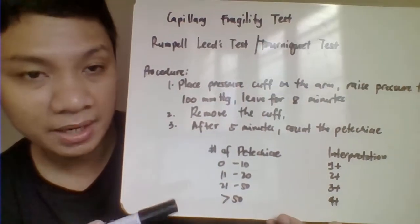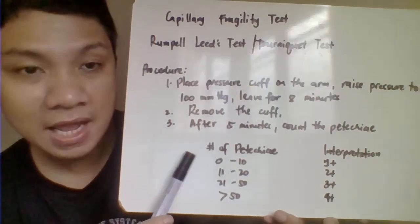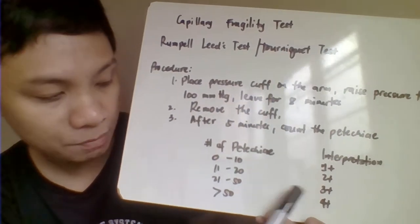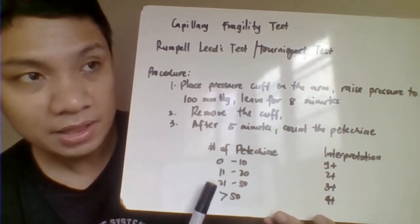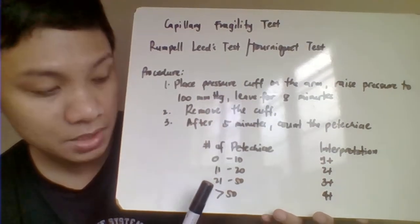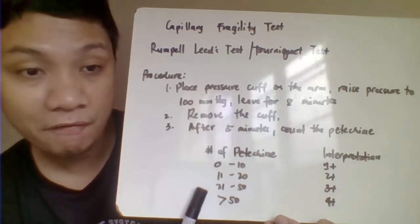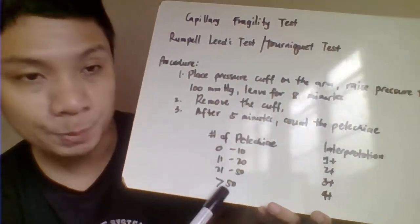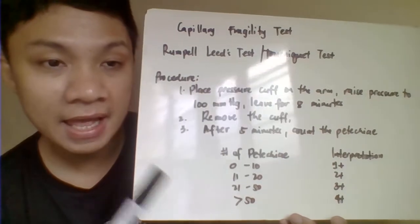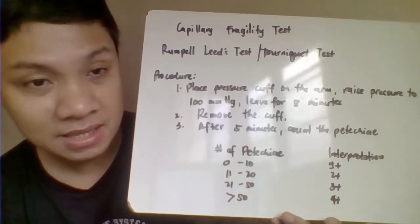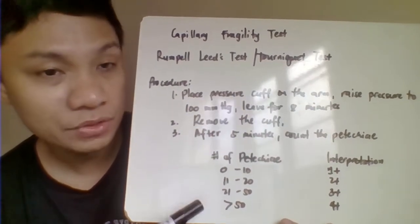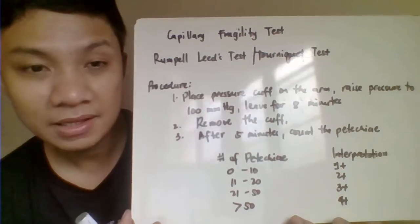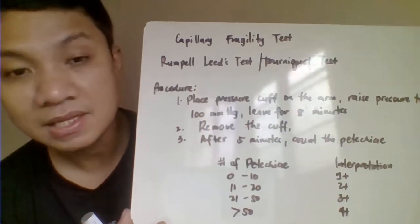For interpretation: 0 to 10 petechiae is 1-plus; 11 to 20 is 2-plus; 21 to 50 is 3-plus; and more than 50 is 4-plus. When reporting results, write the number of petechiae counted after the procedure and also write the interpretation. That's it for the capillary fragility test, thank you.